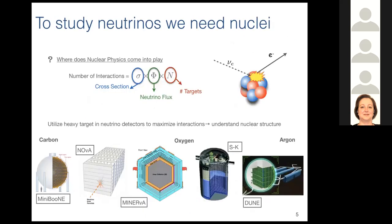The interaction rate depends on the cross-section — which gives the probability of interaction between the neutrino and the target — and the smearing matrix, which connects the true and reconstructed neutrino energy. In order to have high precision in the determination of the oscillation parameters, we want to precisely extract the neutrino flux, and this strongly depends on our quantitative knowledge of the cross-section and the smearing matrix. Nuclear physics plays a fundamental role here, because both current and future neutrino experiments utilize heavy targets in their detectors to maximize the number of neutrino interactions.